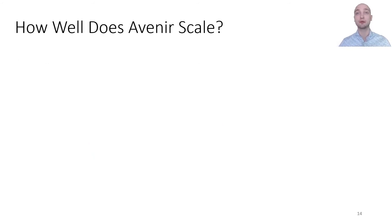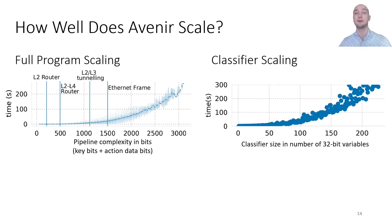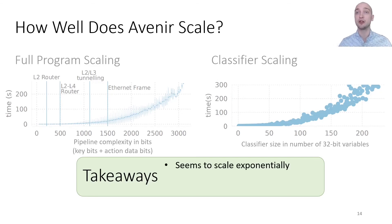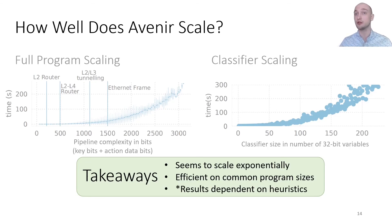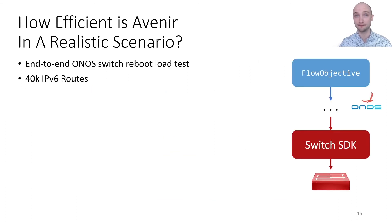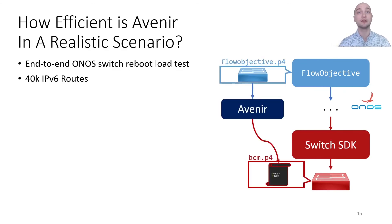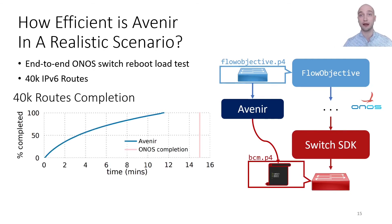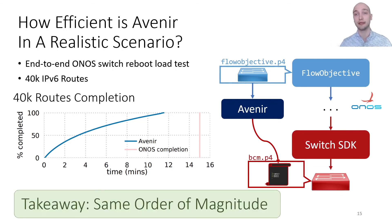To assess the scalability of Avenir, we've procedurally generated microbenchmarks to plot the synthesis time against the pipeline complexity. The details can be seen in the paper, but they show that Avenir seems to scale exponentially and is efficient on realistic program sizes. We also wanted to see how well Avenir works in a realistic scenario, so we used data from a switch reboot load test used to benchmark ONOS. We used Avenir to translate 40,000 IPv6 routes expressed in the highest-level flow objective API to a P4 model of a Broadcom switch. Observing the completion graph on the left, Avenir takes just under 12 minutes to translate these 40,000 operations, and ONOS completes its end-to-end benchmark in just about 15. The takeaway is that Avenir and ONOS complete on the same order of magnitude.